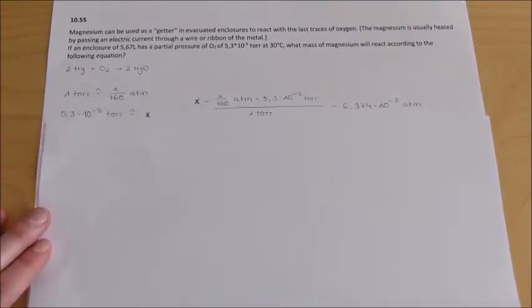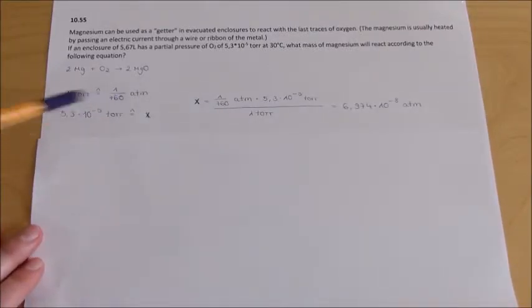Remember, 1 Torr equals 1 divided by 760 ATM. 5.3 × 10^-5 Torr leads to X.